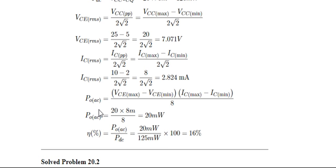So for efficiency, P out AC is the peak to peak voltage difference times the current divided by 8.